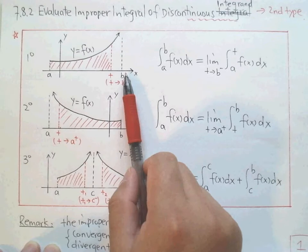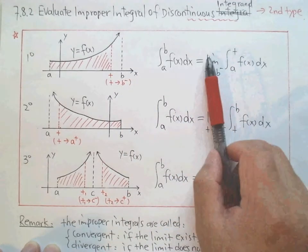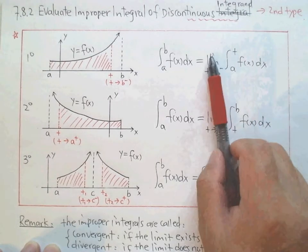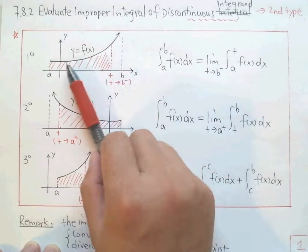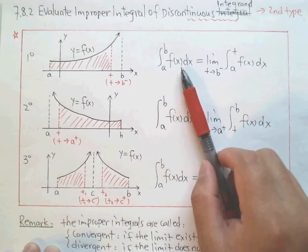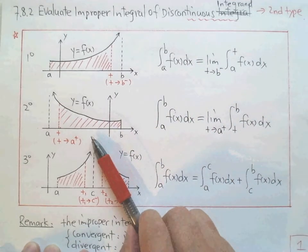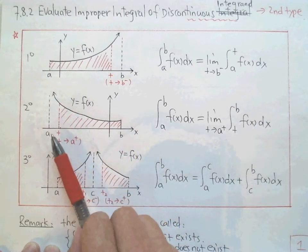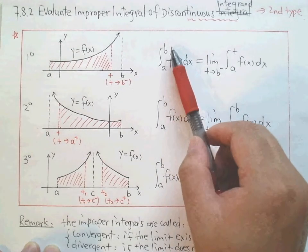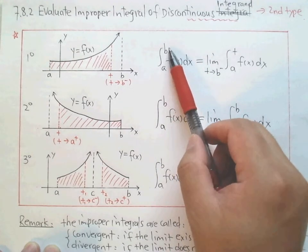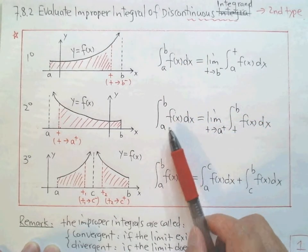We then define it as the limit. If the limit exists, it means the area converges, and we say the improper integral is convergent. The second case is when the function is discontinuous at the left endpoint a, the lower limit. The first case was discontinuous at the upper limit; the second is discontinuous at the lower limit a.